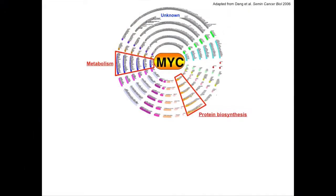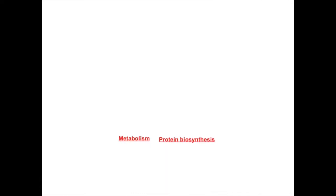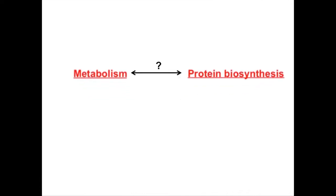We address this question downstream of a very important oncogene known as MYC. It's a transcription factor that regulates many target genes in the genome. Two classes of target genes that MYC predominantly regulates are involved in protein synthesis and metabolism. Therefore, this was the perfect tool for us to address our hypothesis of how metabolism and protein biosynthesis can be regulated in cancer cell growth.